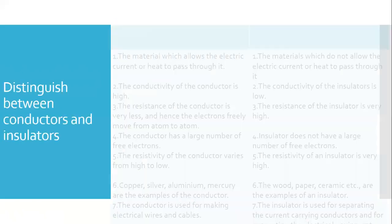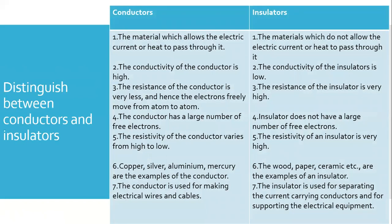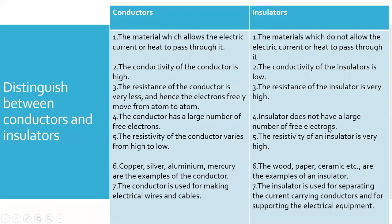Distinguishing between conductors and insulators: conductors are materials which allow electric current or heat to pass through them. The conductivity of a conductor is high — charges flow very well. The resistance of a conductor is very low, so electrons freely move from atom to atom. Conductors have a large number of free electrons and are mostly metals.